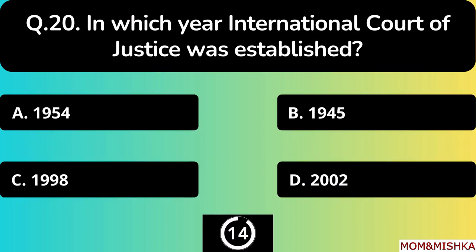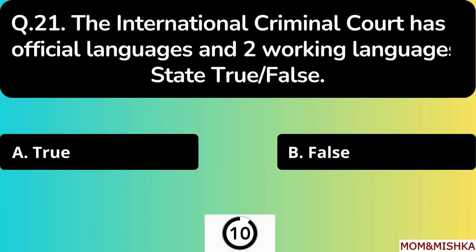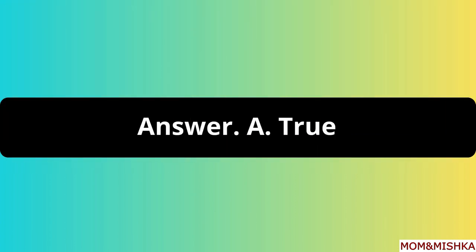In which year was the International Court of Justice established? The International Criminal Court has six official languages and two working languages — the International Court of Justice. State true or false? It's true — option A.